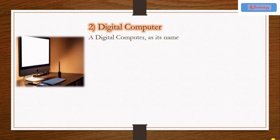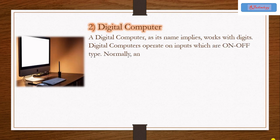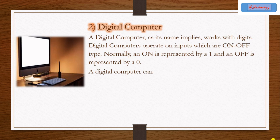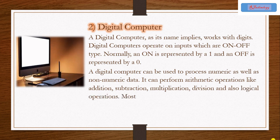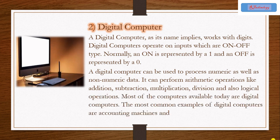Now we are going to see digital computer. A digital computer as its name implies works with digits. Digital computers operate on input which are ON-OFF type. Normally an ON is represented by a 1 and an OFF is represented by a 0. A digital computer can be used to process numeric as well as non-numeric data.